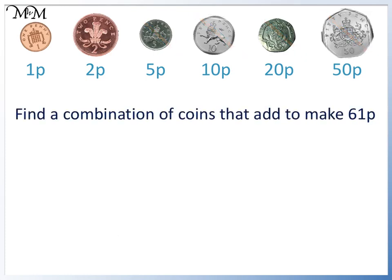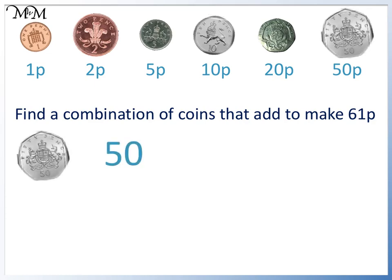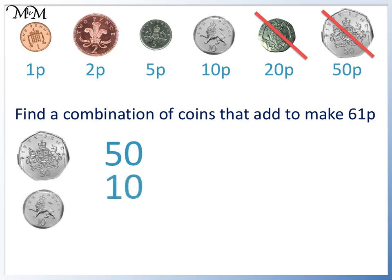Find a combination of coins that add to make 61p. We start with the largest value coins. We can take a 50p. We have 50 and need 61. Another 50 makes 100 which is too much. 50 plus 20 equals 70 which is too much. We need 61. We can add 10 because 50 plus 10 equals 60.